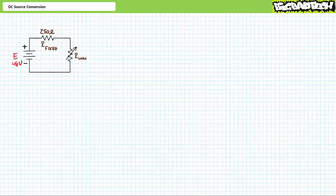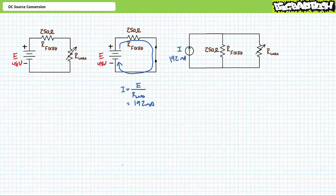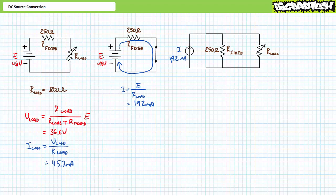Our second illustrated example features a 48-volt source in series with a fixed 250 ohm resistor and a variable load resistor. With the variable load resistor removed and a short circuit in its place, an application of Ohm's law demonstrates the short circuit current will be 192 milliamperes. Therefore, a 192 milliampere current source in parallel with a fixed 250 ohm resistor should behave identically. As proof of equivalency, with the load resistor set at 800 ohms, our original configuration suits the DC voltage divider rule. An application demonstrates voltage across the load will be 36.6 volts, and a subsequent application of Ohm's law gives a current of 45.7 milliamperes.